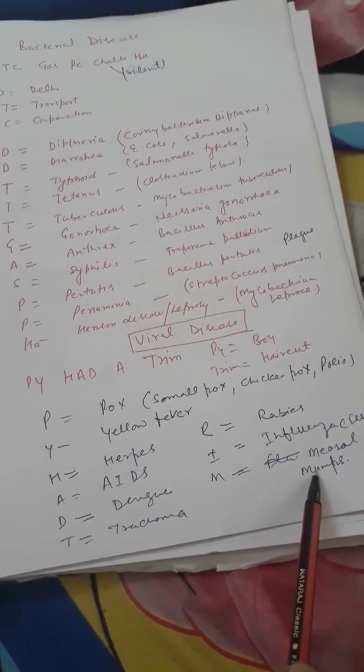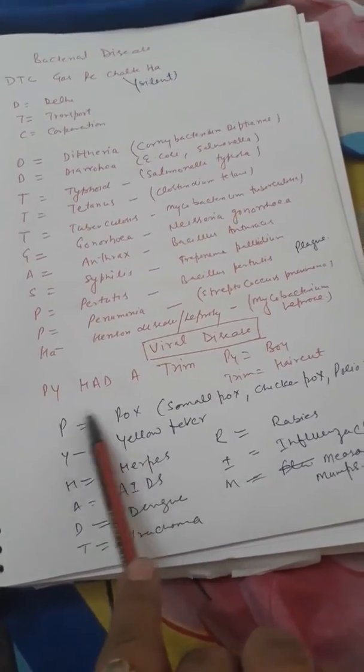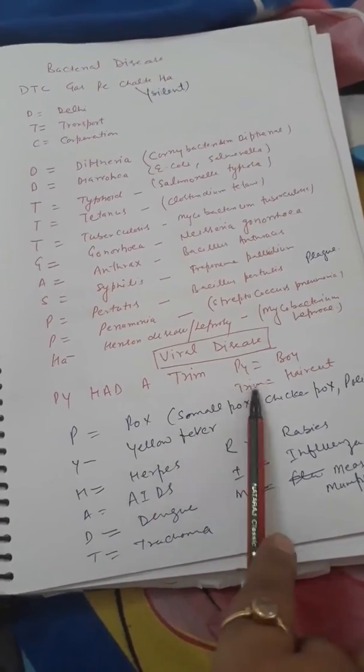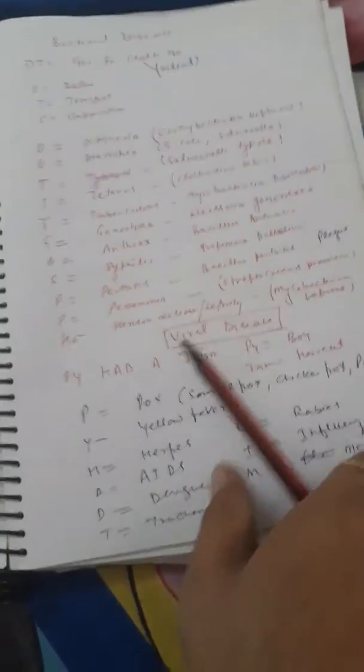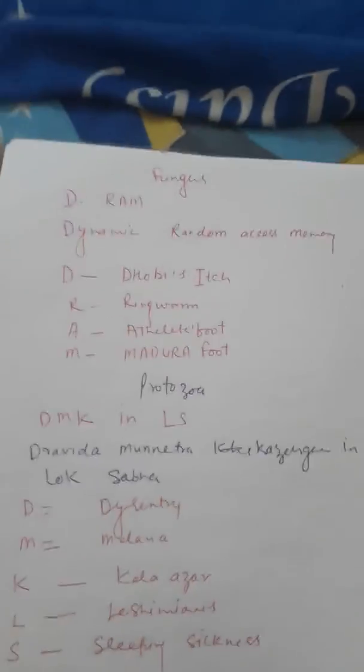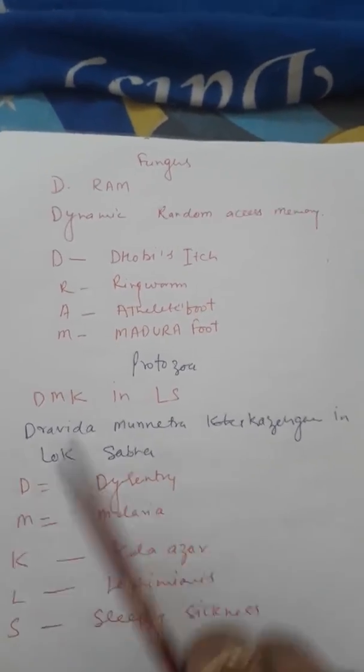R se aa jayega aapka Rabies. I stand for Influenza. M stand for Mumps and Measles. So this is all PIE HEAD A TRIM, meaning that PIE is a little boy who has a haircut trim, and this is how you can do this. This is what fungal disease.